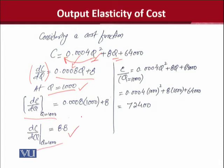So you can see it is a very simple calculation, guiding us ke, joh marginal function hai, at output 1000, it will be equal to 8.8. Dursi side pe, hum ne average function ko calculate kia hai. See, when q is 1000, jahaan jahaan hume q nazar aya, hum ne vahaan per, 1000 substitute kia.